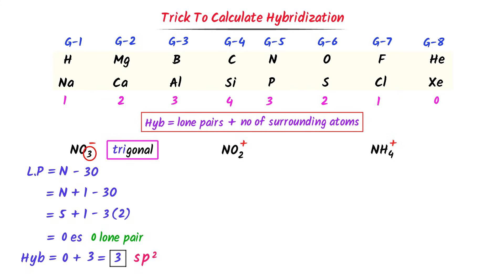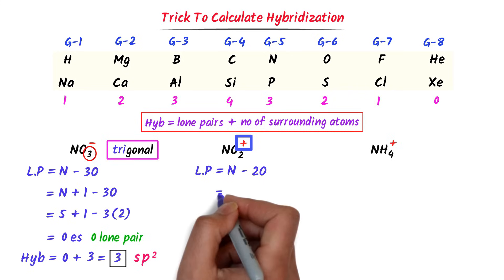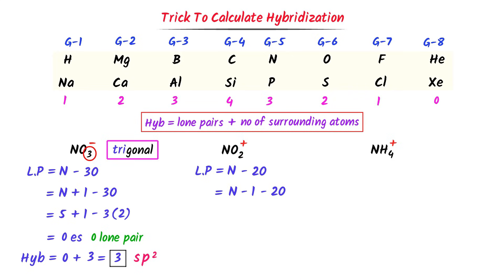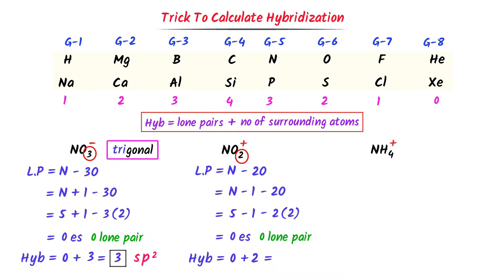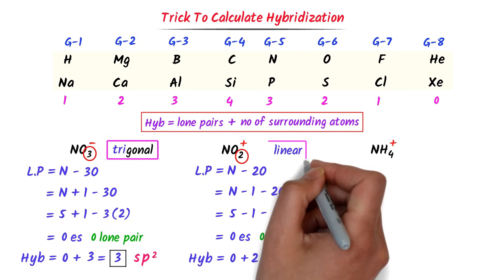In case of NO₂⁺, I write nitrogen minus 2 oxygen. This ion has lost 1 electron, so I subtract 1: (5−1) − (2×2) = 0 electrons — 0 lone pairs. Hybridization = 0 + 2 = 2 hybrid orbitals, meaning sp (1s and 1p). So the hybridization of nitrogen is sp, and for sp hybridization the structure of the molecule is always linear.